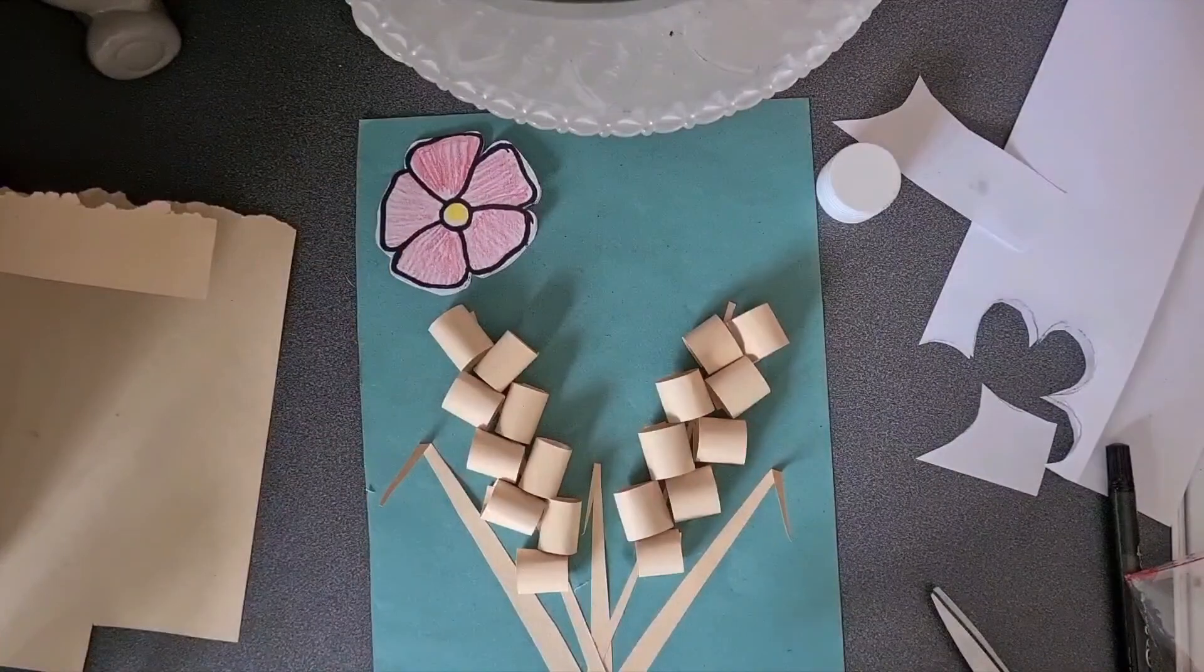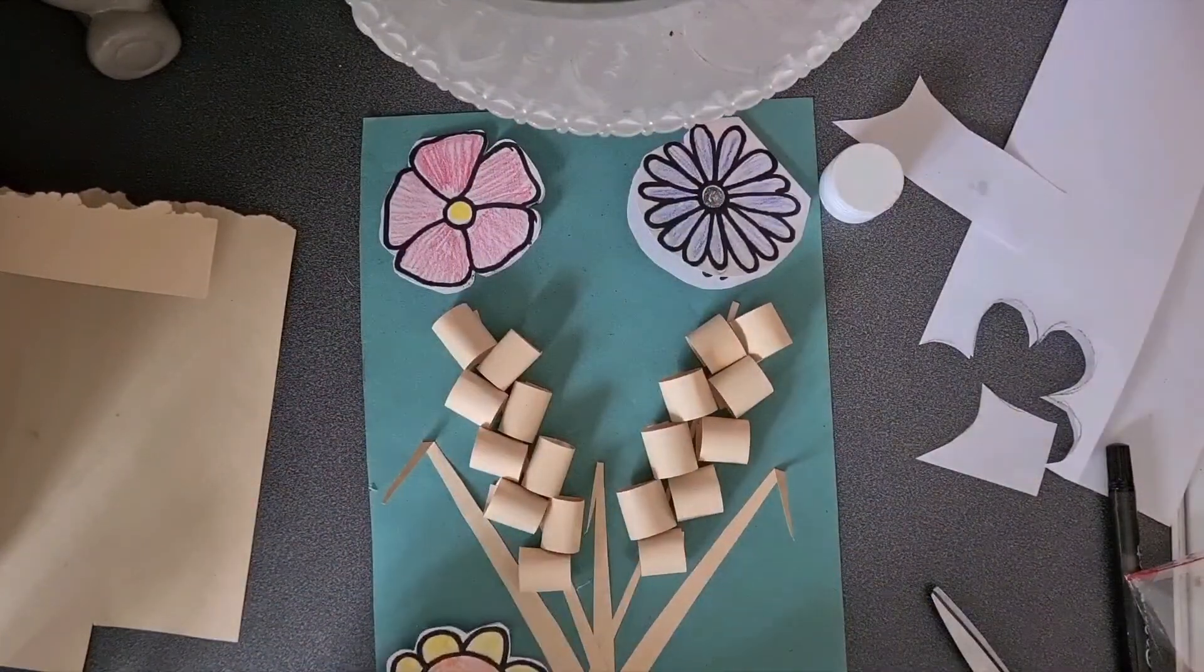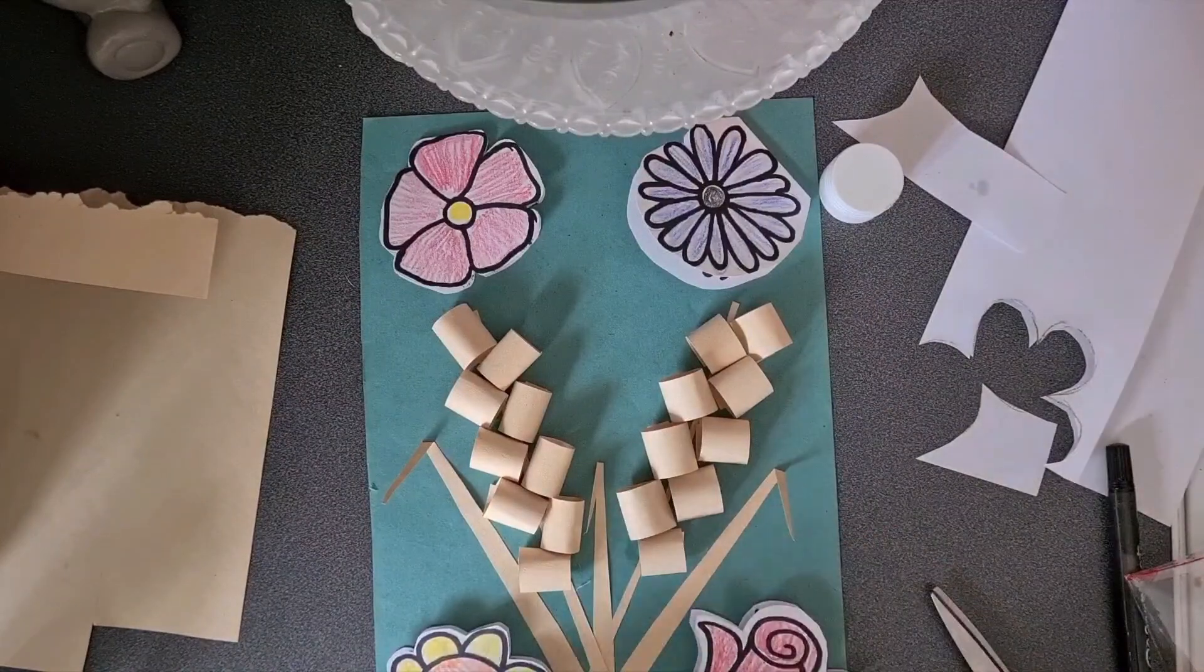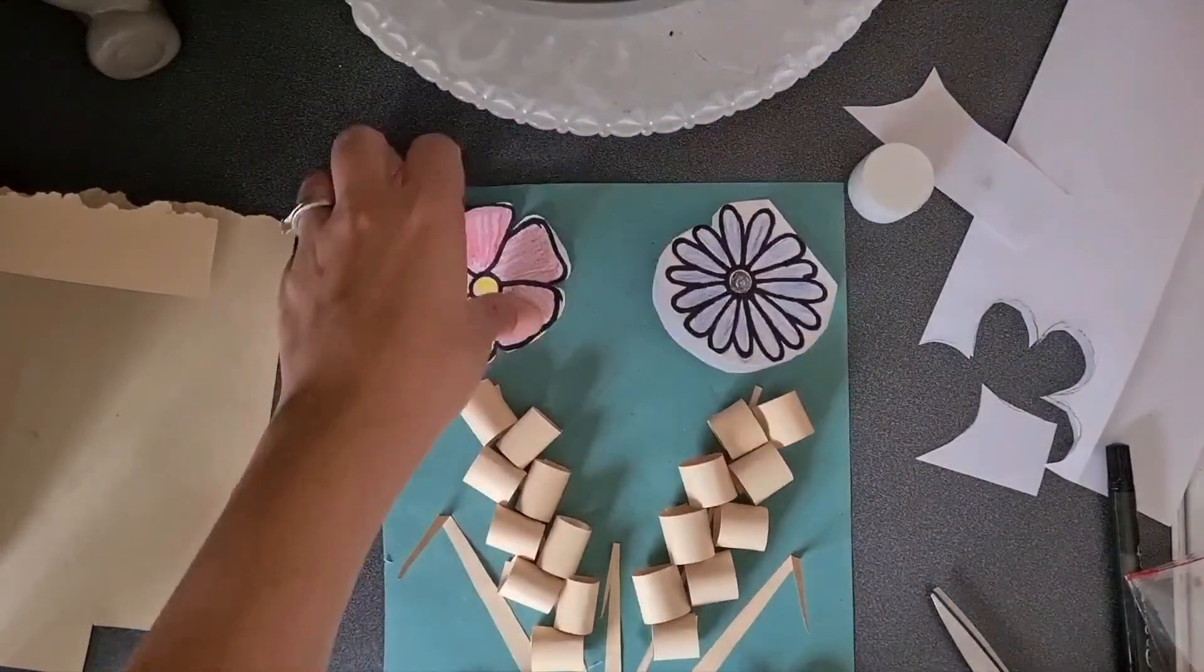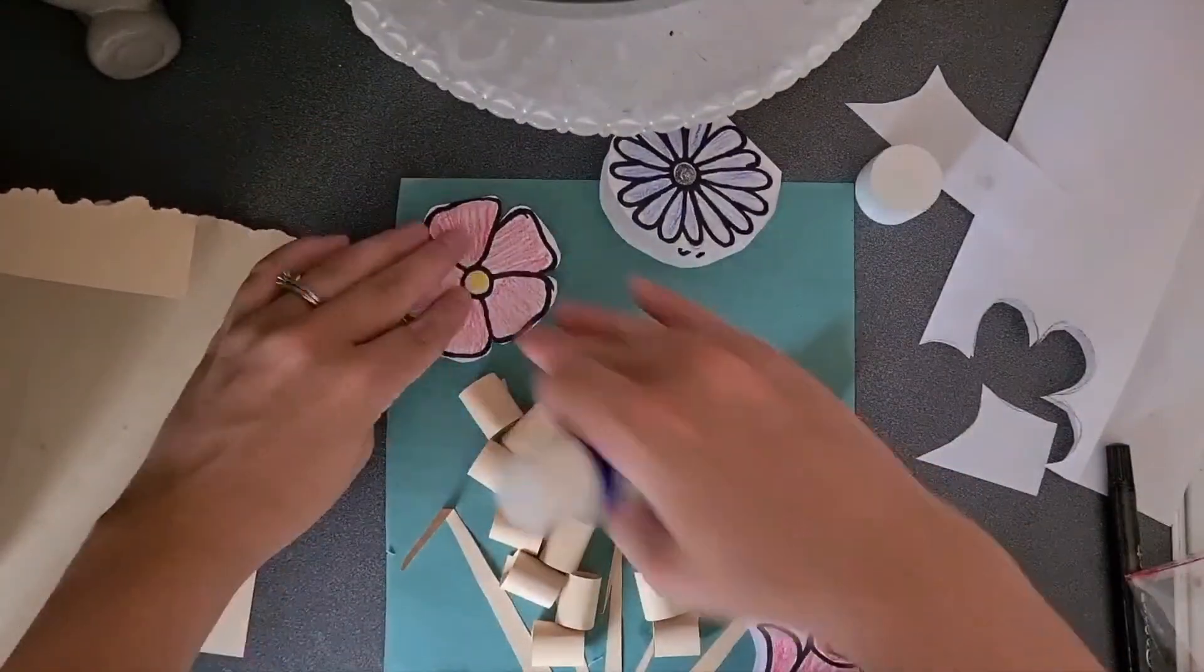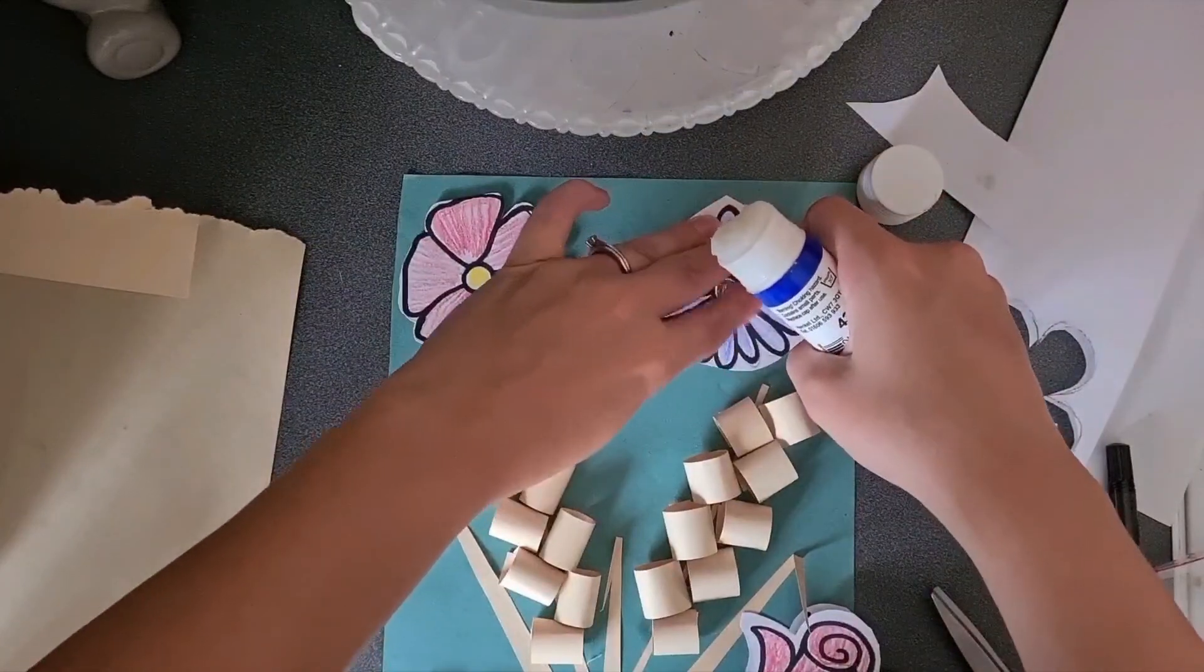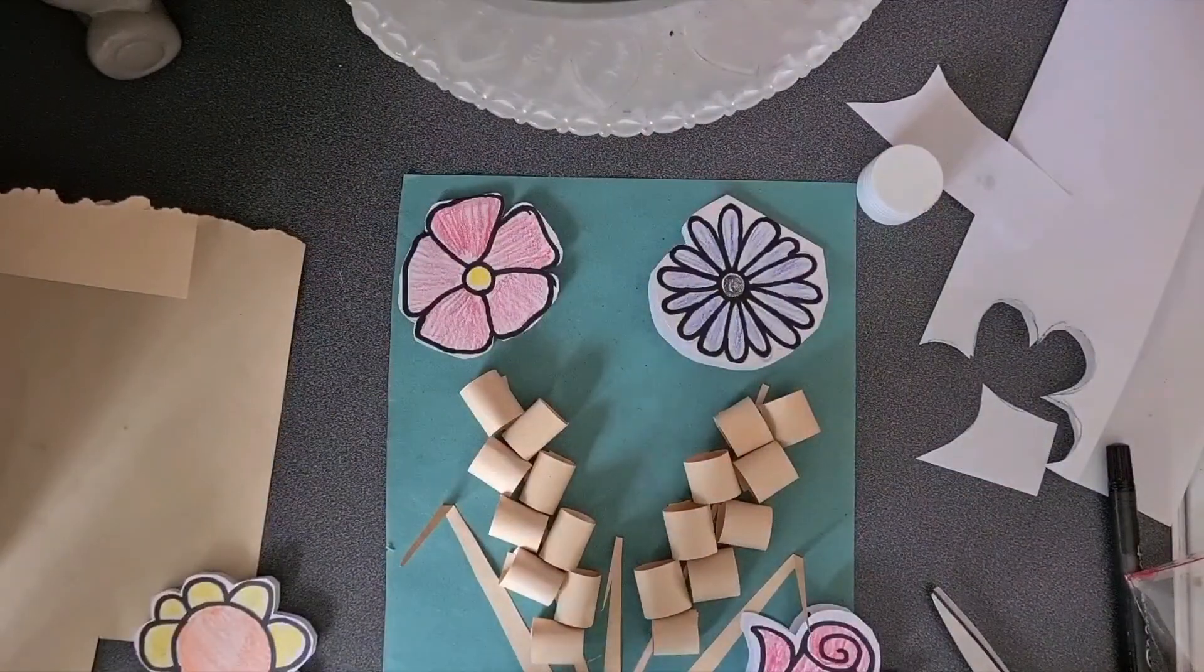And now, just have a look at the flowers that you've made and see where you want them to go. I think I want them like this. And when you're happy with them, just take your glue and glue them down. Make sure that the opening is at the top or the bottom or wherever you want it to be. Just make sure that they still open up.